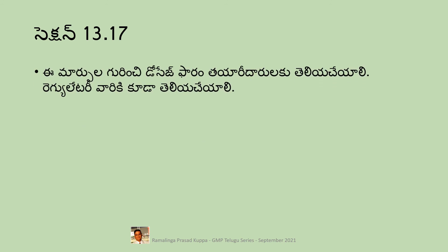Section 13.17 prescribes that all changes have to be communicated to the customer and regulatory agencies. There are different types of communications like annual notifications, immediate notifications, minor, major, etc. The type of communication also depends on the regulatory agency. I hope the content of section 13 of ICH Q7 is explained well for Telugu viewers. Try to compare the Telugu text with the original text of ICH Q7 and modify your change control system accordingly.